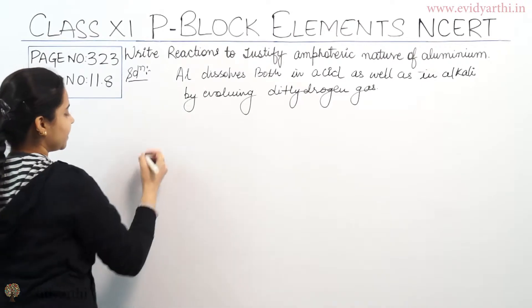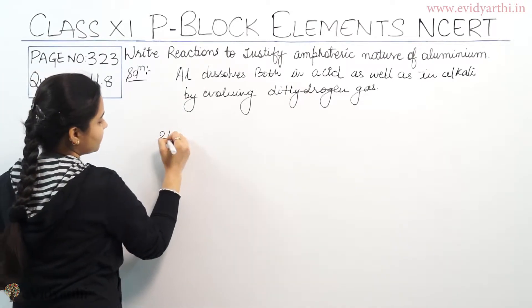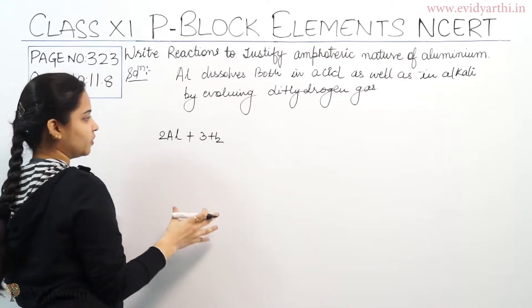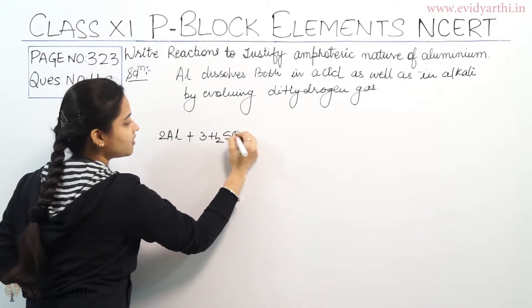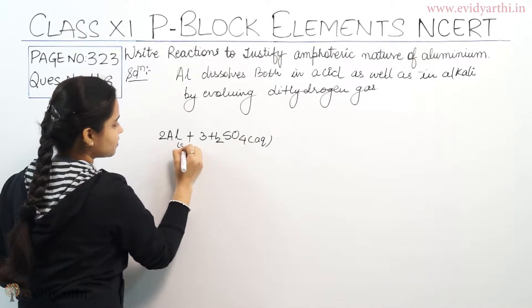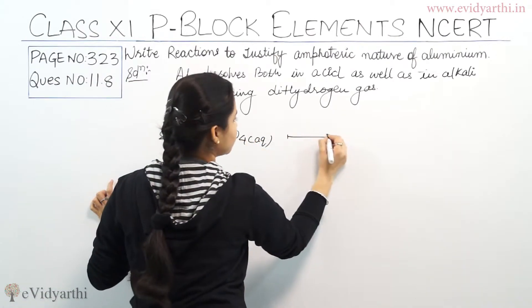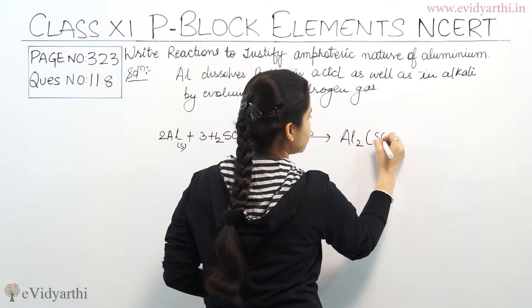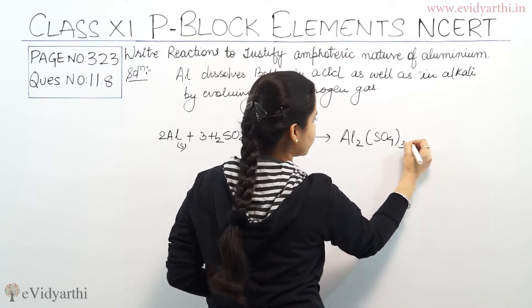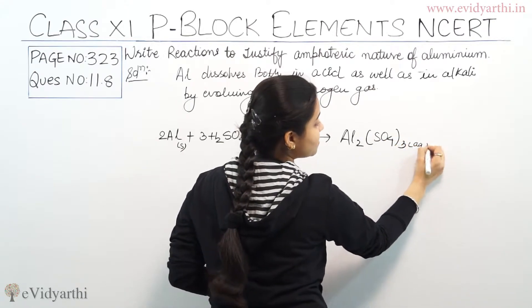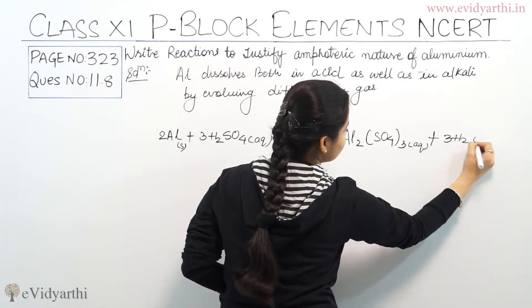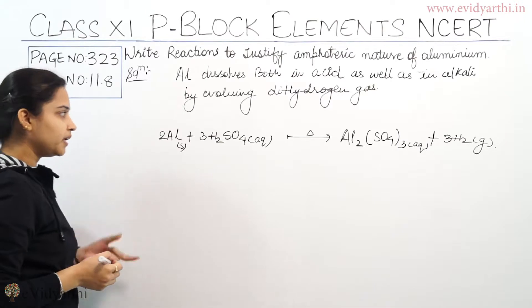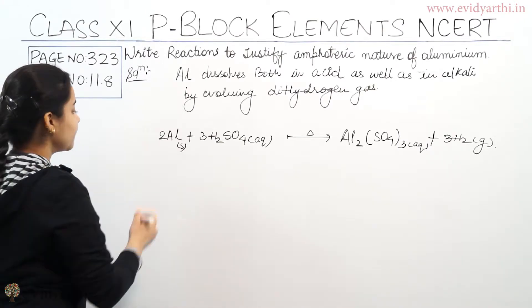This is the first reaction. When aluminium reacts with sulfuric acid — Al (solid) reacts with H₂SO₄ (aqueous) — upon heating, we get Al₂(SO₄)₃ in aqueous state plus 3H₂ in gaseous state. This is the reaction when aluminium gets reacted with an acid solution.